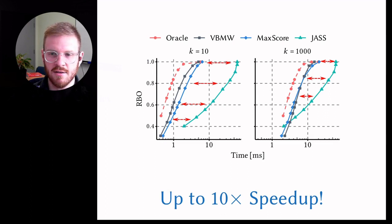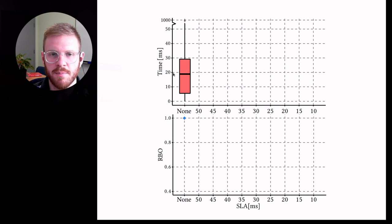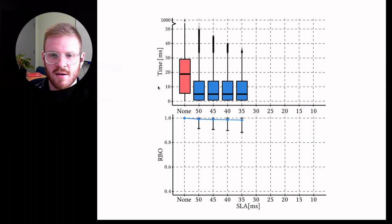We also looked at increasing the SLA to be more and more strict. In this figure, a red box means that the SLA was violated and a blue box means that the SLA was met. The top figure is showing the time in milliseconds and the bottom figure showing quality with respect to the exhaustive. What you can see is as the SLA gets stricter and stricter, we're able to continue meeting the SLA, but with some drop in quality.